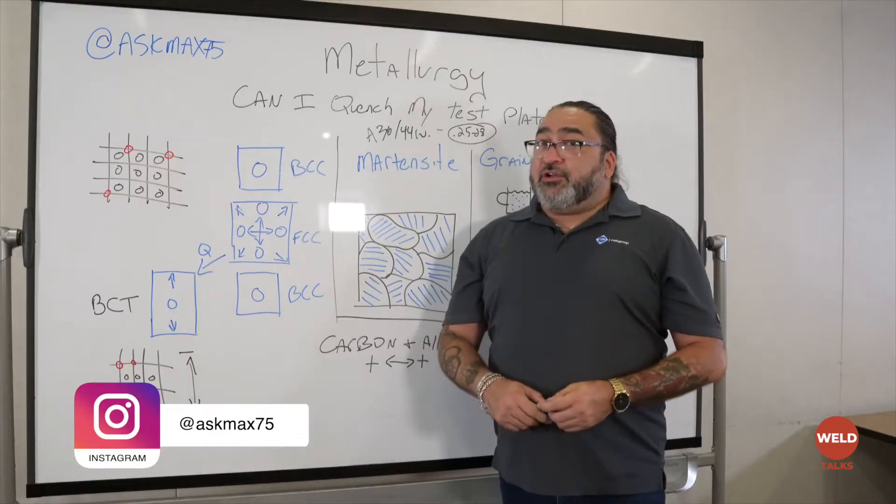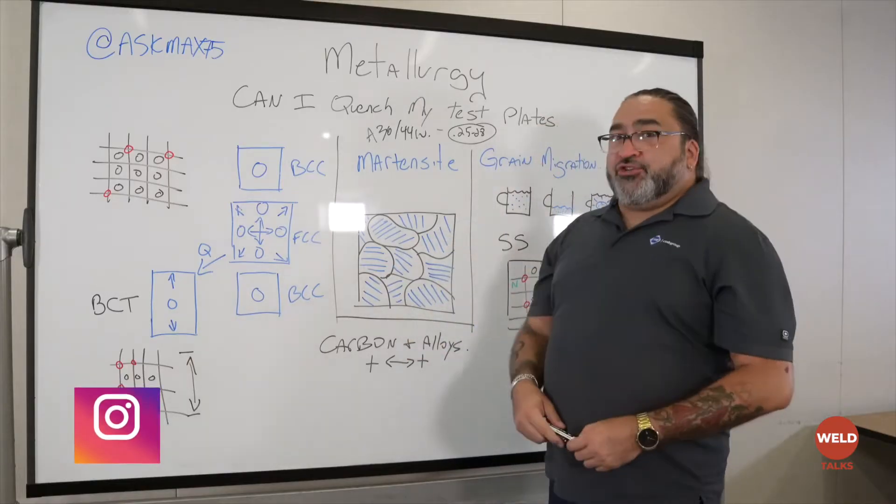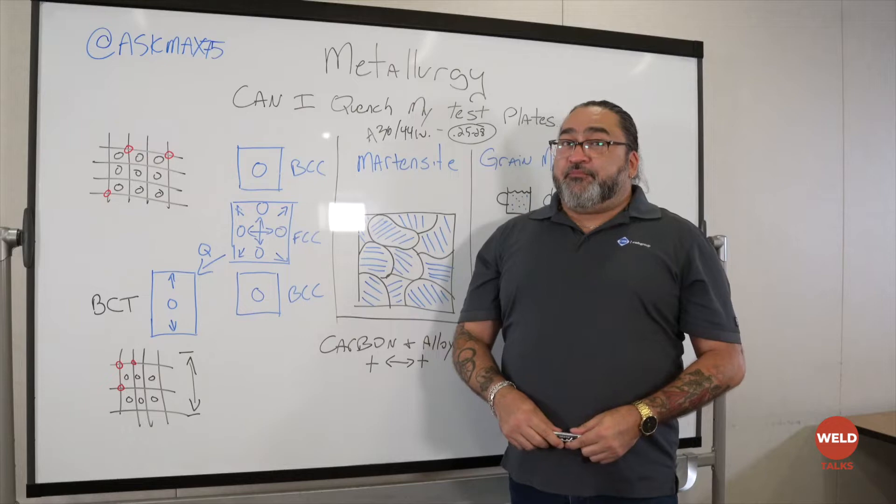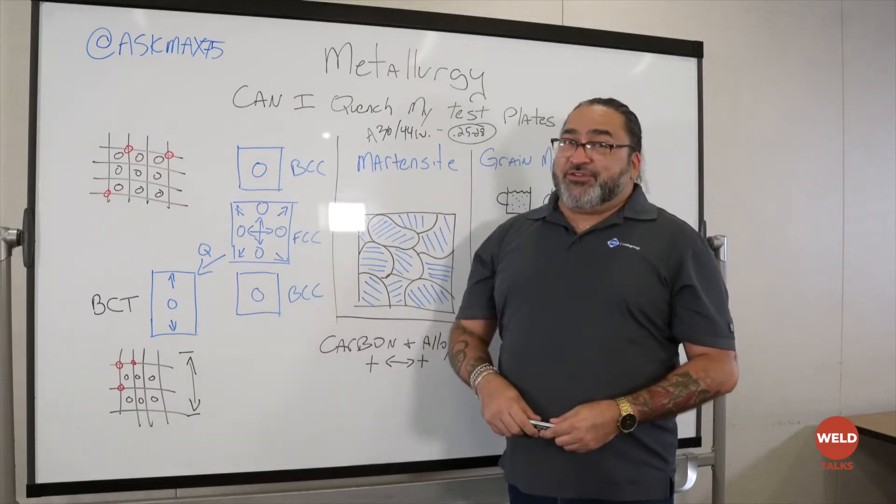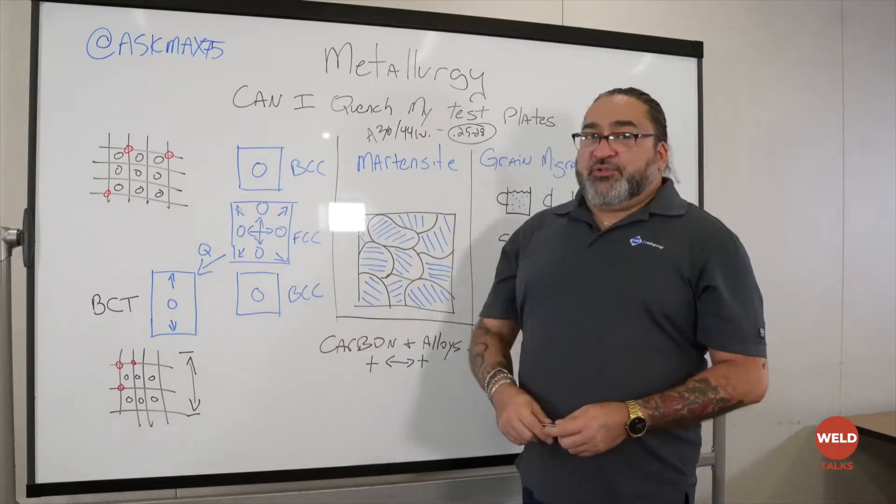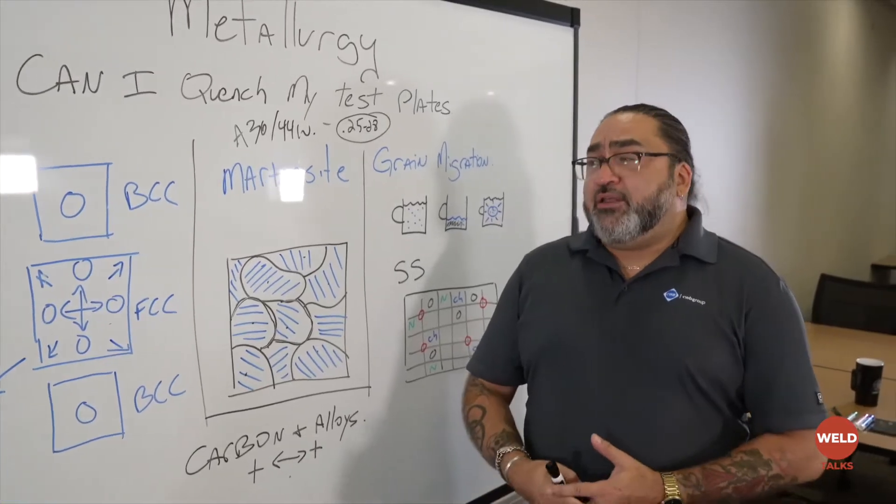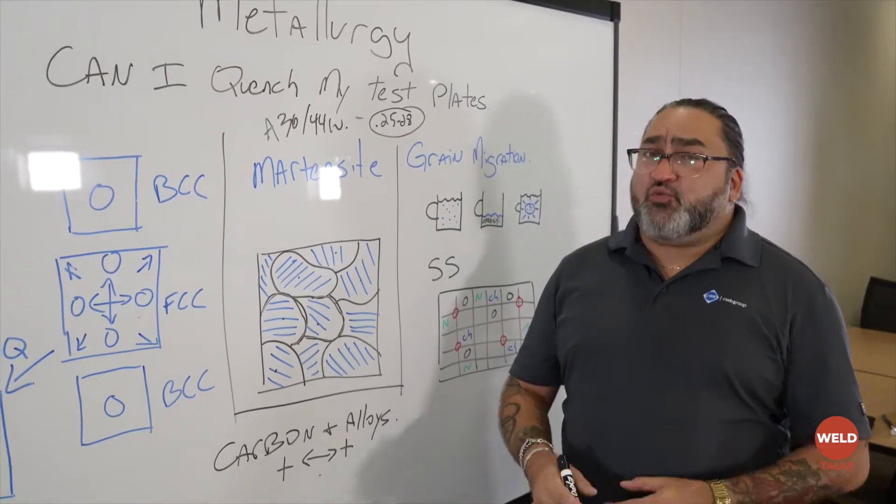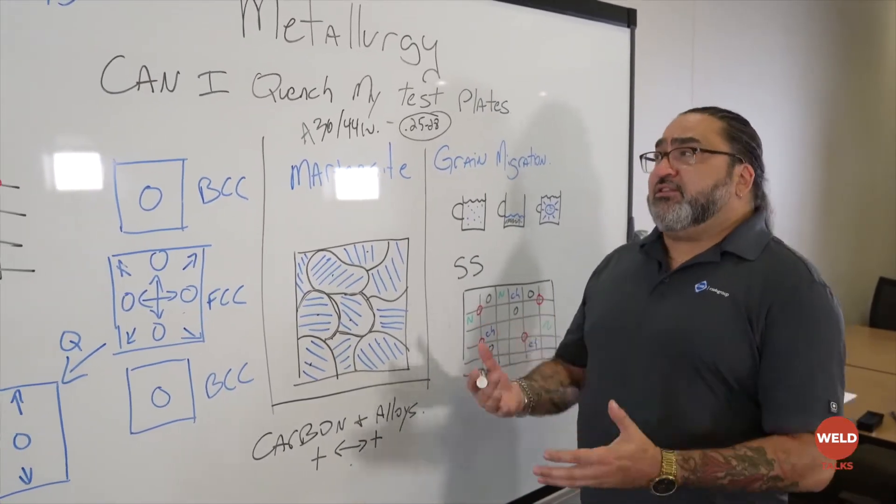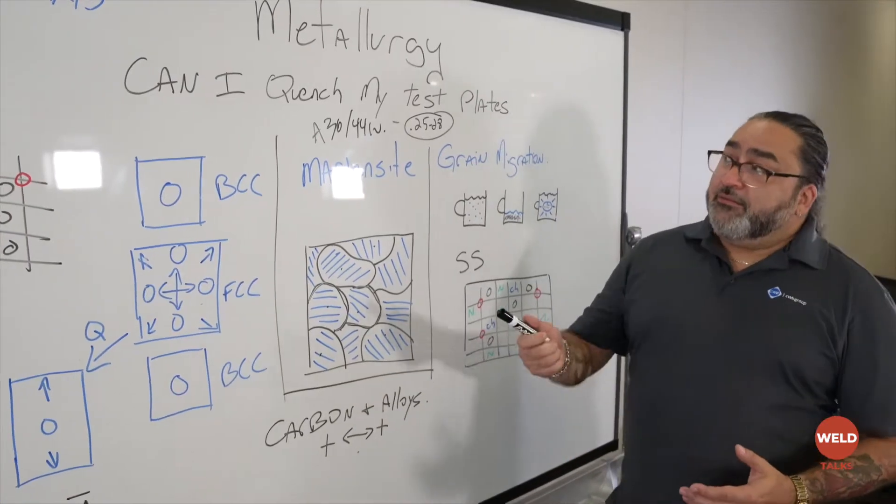Today I'm going to talk about something specific in metallurgy that I get asked all the time. Just two weeks ago I had a student ask me this: Can I quench my test plates? We're talking about either a CWB test, AWS test, whatever it is. But if you're going to test the plate, bend it, can I quench it?